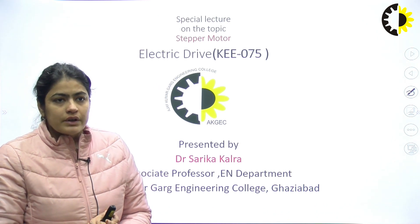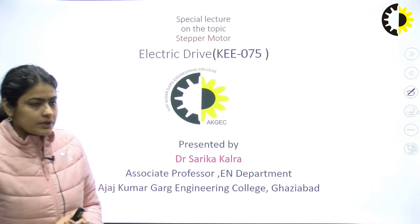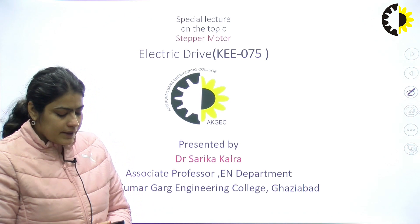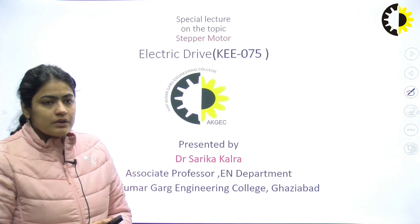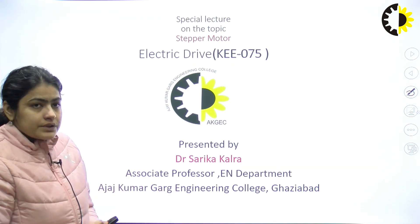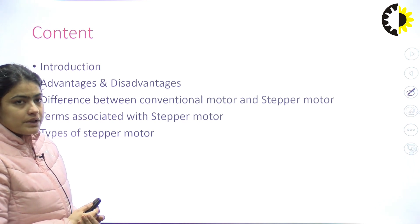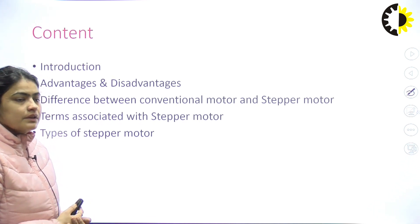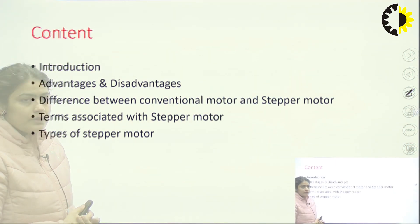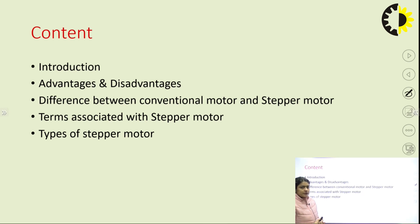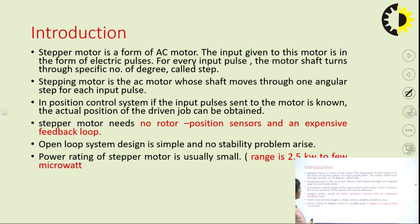The stepper motor is a special kind of motor used in drive systems, but it is used for low power applications to basically control the position of any load. It is a form of AC motor and the input given to the motor is in the form of electric pulses. For every input pulse, the motor shaft turns through a specific number of degrees called steps.